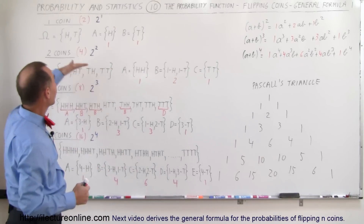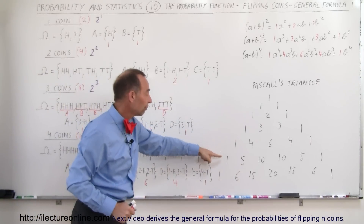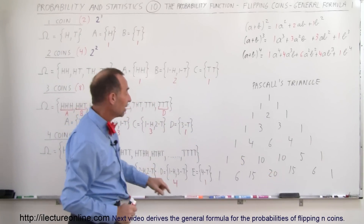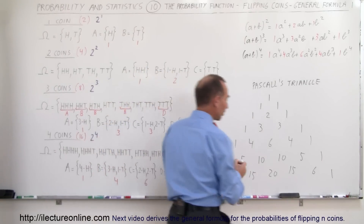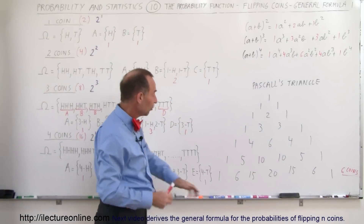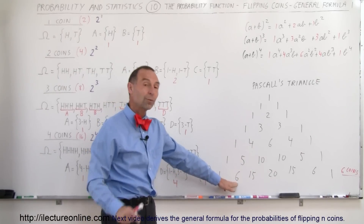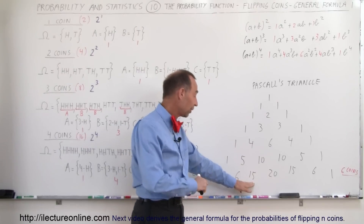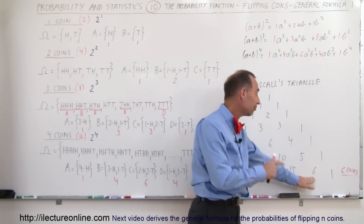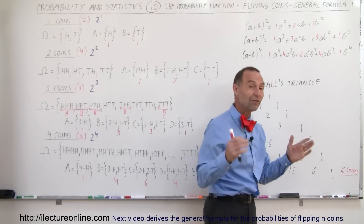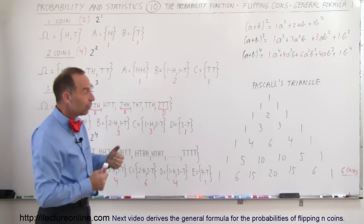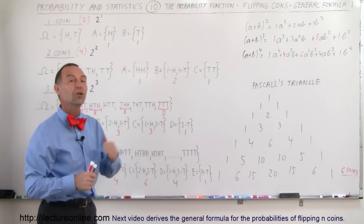If you keep on flipping more and more coins — so this would be the case for 5 coins, 6 coins — the number of elements you would have in the events follows Pascal's Triangle. For 6 coins you would have: 1 element for all 6 heads, 6 cases for 5 heads and 1 tail, 15 cases for 4 heads and 2 tails, 20 cases for 3 heads and 3 tails, 15 cases for 2 heads and 4 tails, 6 cases for 1 head and 5 tails, and 1 case for all 6 tails. You can use Pascal's Triangle to find the number of possibilities and therefore the probability.